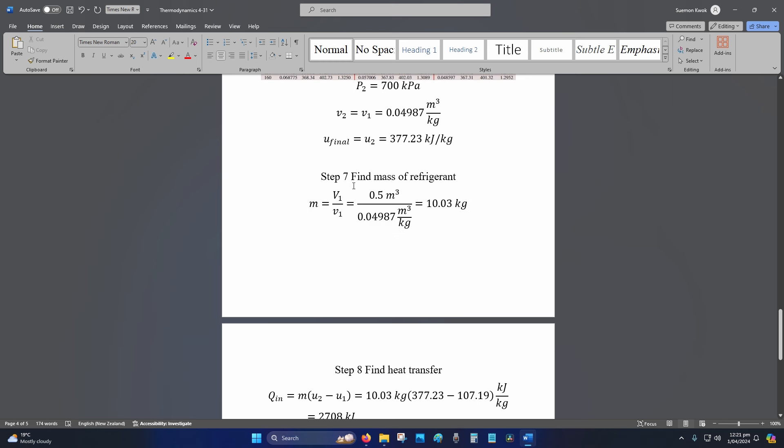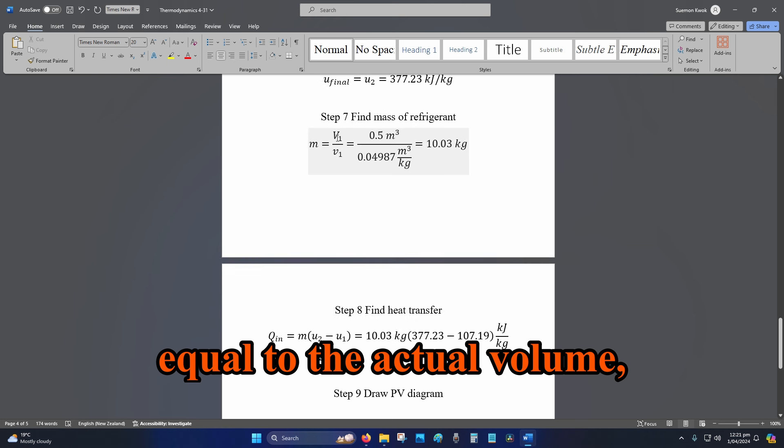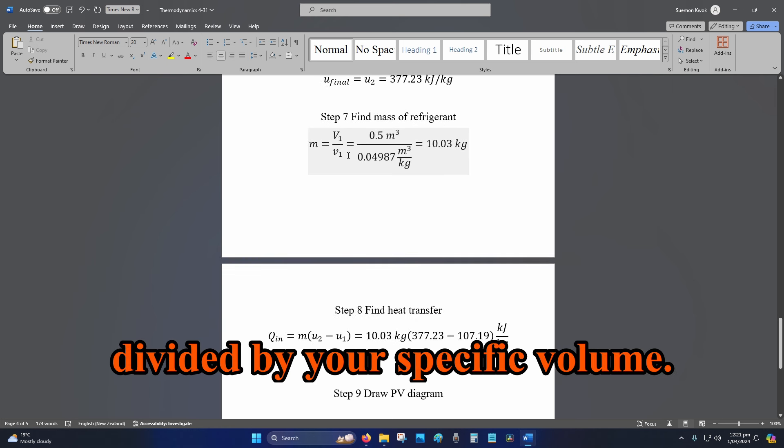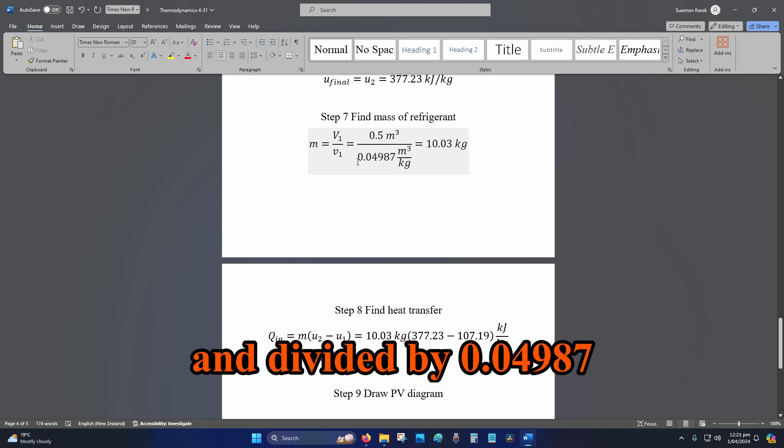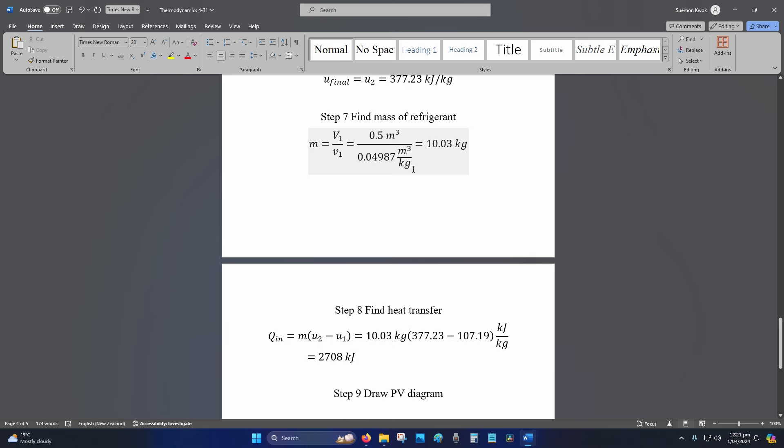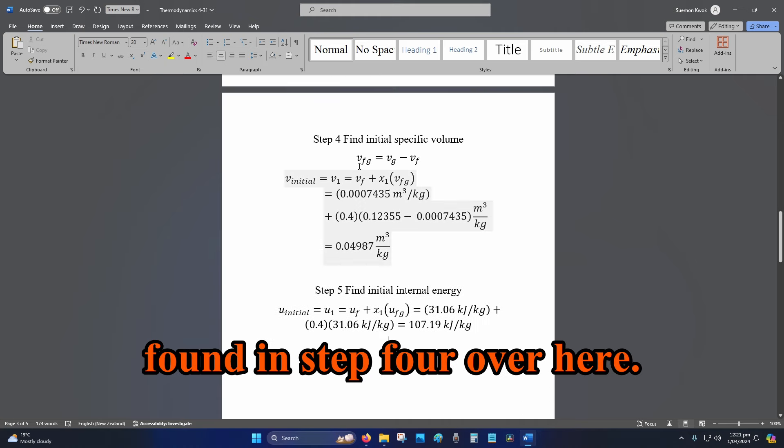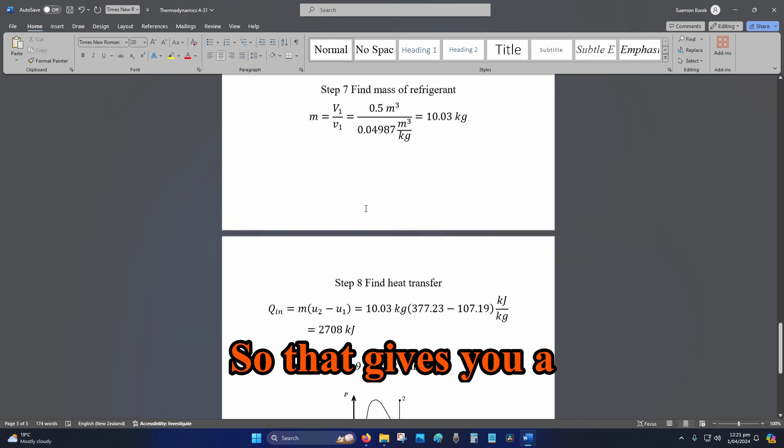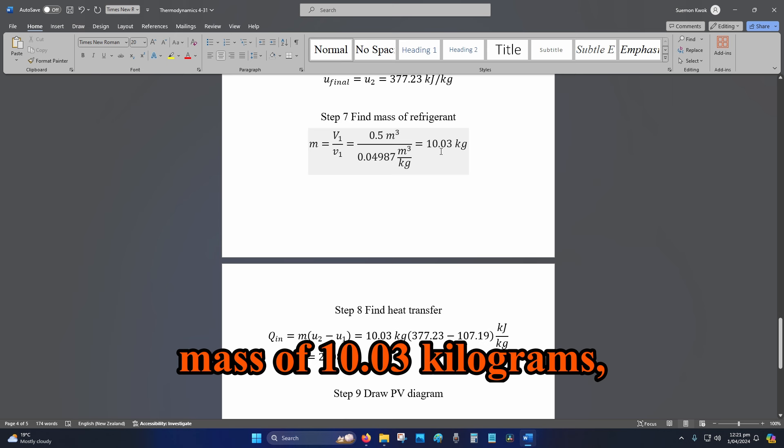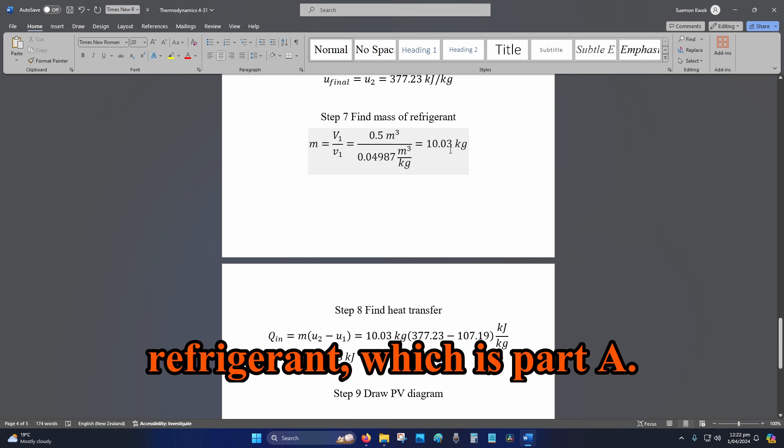Step 7, which is part A: Find the mass of the refrigerant. m equals the actual volume divided by your specific volume. 0.5 m³ is given in your question, divided by 0.04987 m³/kg from Step 4. That gives you a mass of 10.03 kg, which is part A.